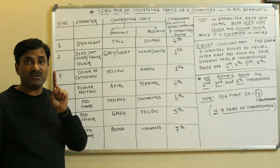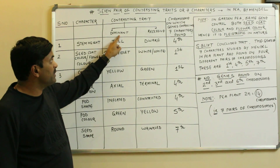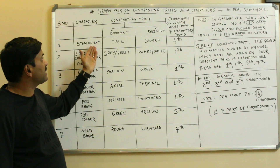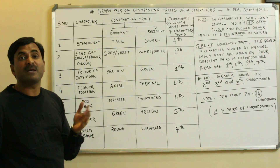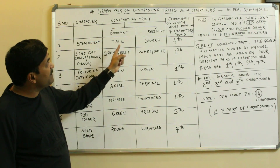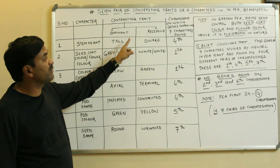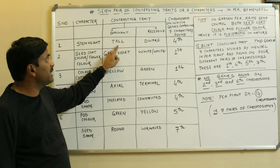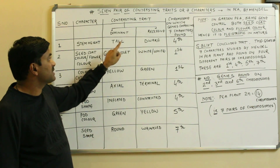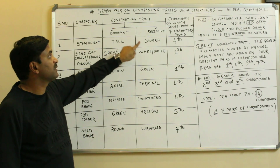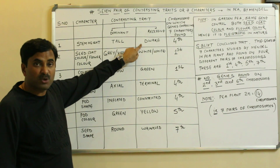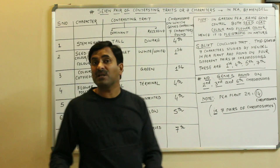A contrasting trait has a dominant as well as a recessive form. For example, if the character is stem height, there is one character but two contrasting traits — one dominant and one recessive. If the dominant is tall, then the recessive will be dwarf. Let's begin the discussion.